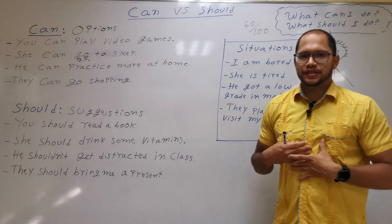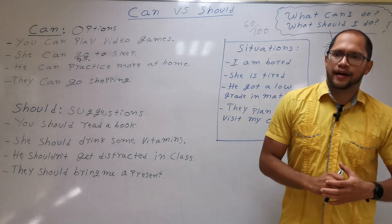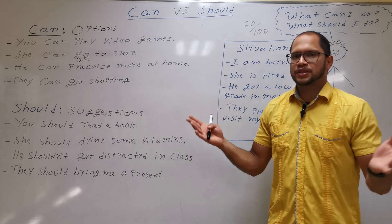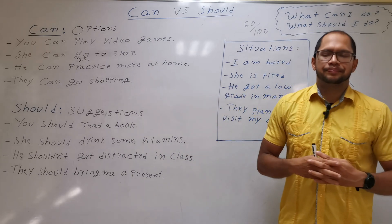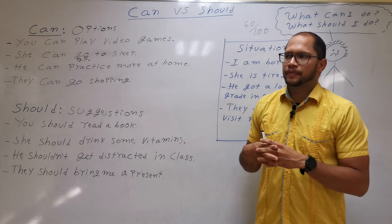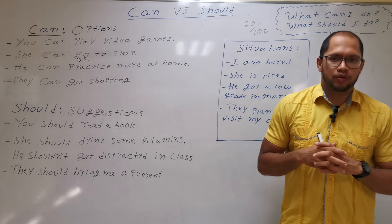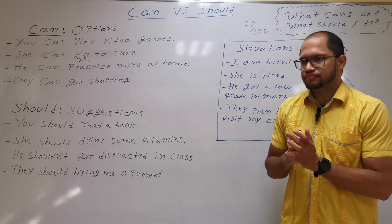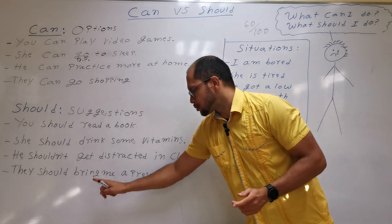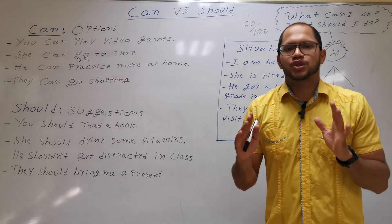Another example: they plan to visit my city. Options: they can go shopping, they can go to the rivers, they can go to the pool, they can go bicycling — etc. But I think they should bring me a present. That is my recommendation, my suggestion.